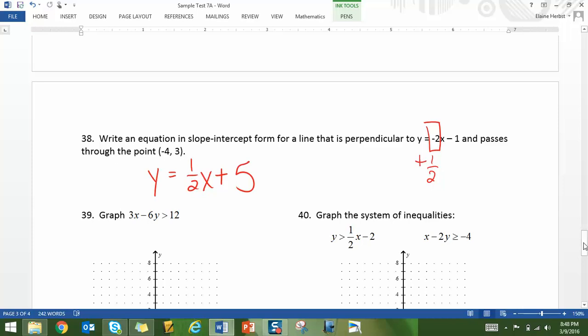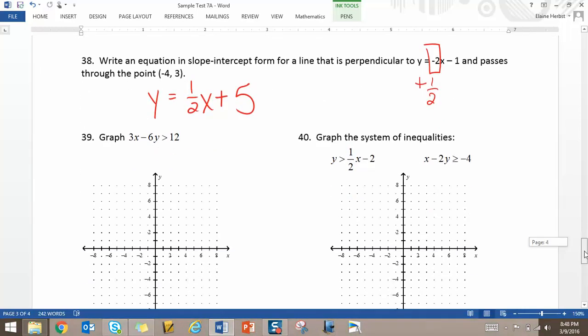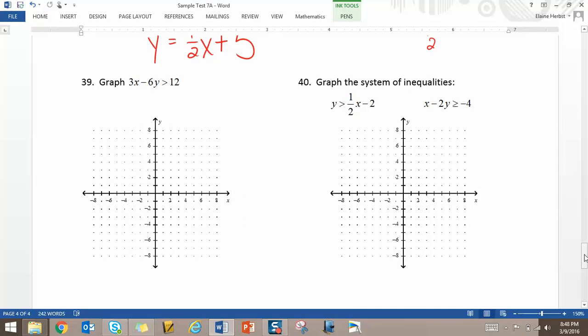Now we have inequalities. So this was our most recent unit before we kind of had to pause for I-step or for the Pythagorean theorem. But number 39, wanting you to graph just one inequality. And you always have the option to rearrange this into slope-intercept form. I think it's easier here just to graph the intercepts. The x-intercept would be a positive 4 and the y-intercept is a negative 2.